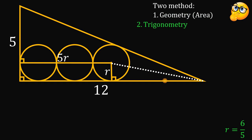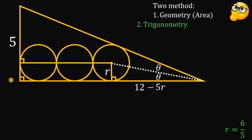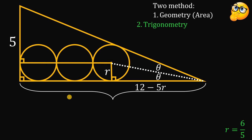Now let's solve using trigonometry. We consider this angle right here — these two angles are equal, so let's call each one theta, making the full angle 2-theta. The length of this segment equals 12 minus 5r, and the total length equals 12 units. We can see two right triangles: the big one and a small right triangle.